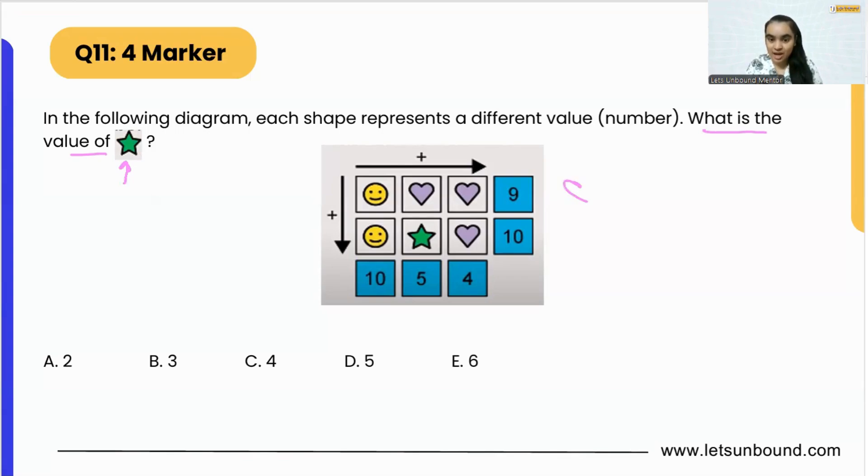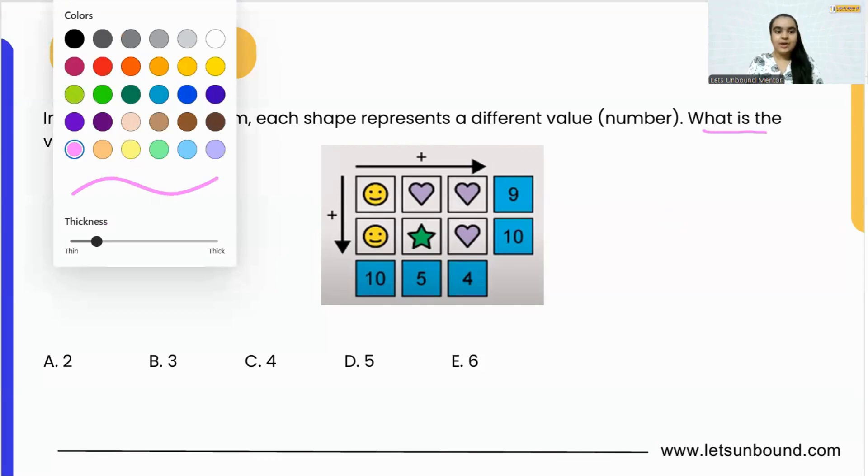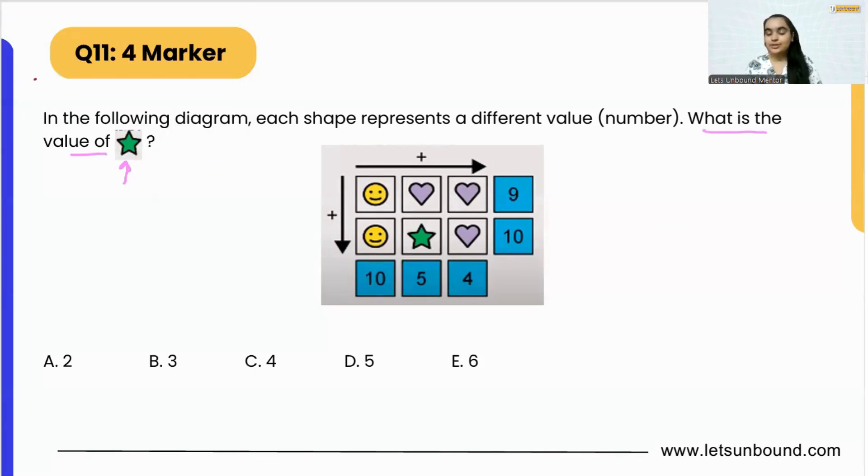Now, as you can see in this figure, we are having heart, we are having star, and we are having a smiley face. So all these three figures contain different numbers. It represents a different number.